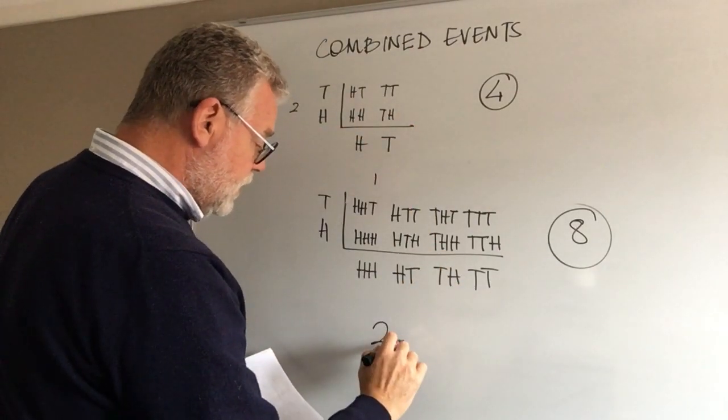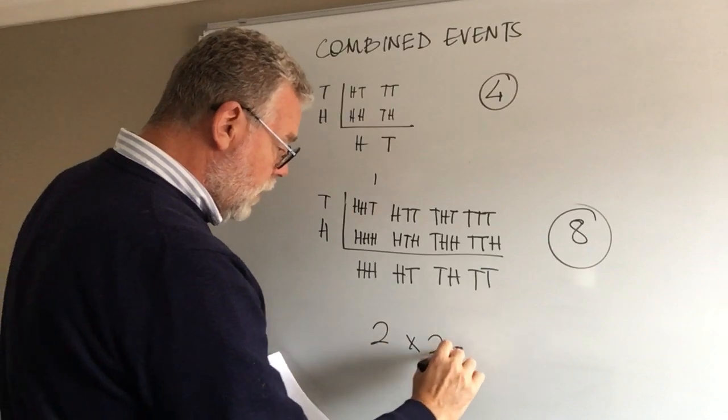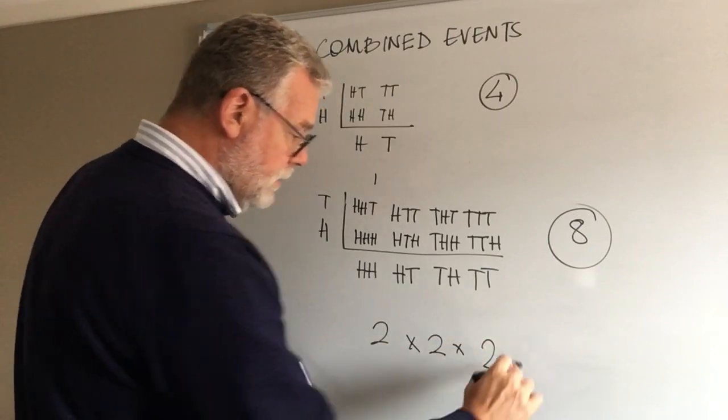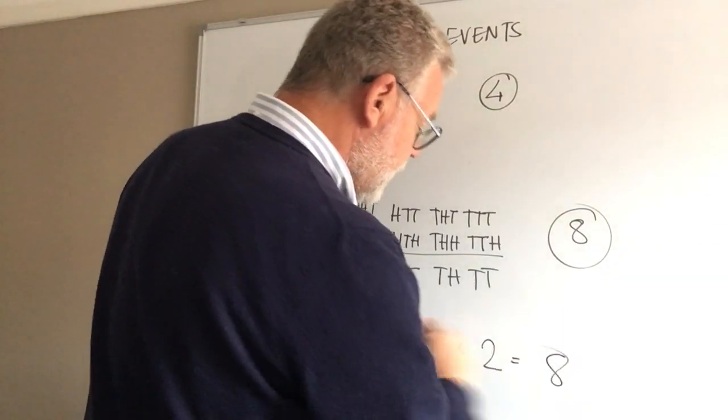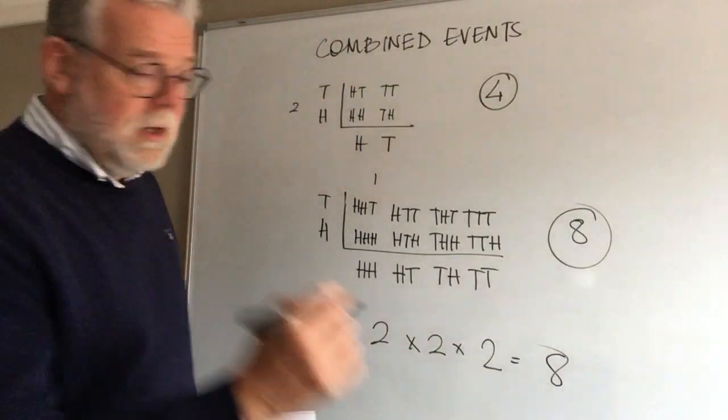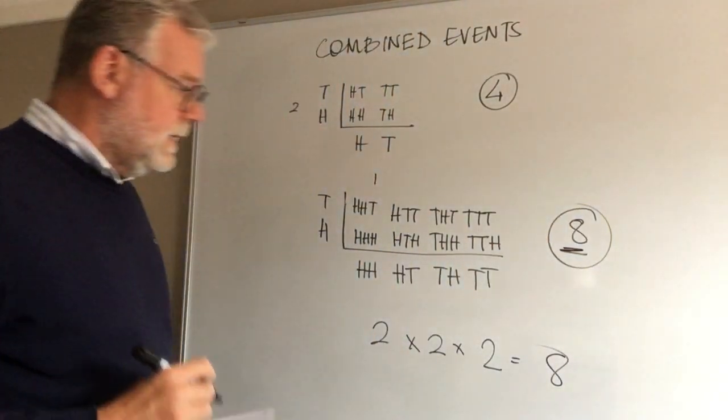Now that's interesting. Notice we had four there. We've got two options on coin one, two options on coin two, two options on coin three. Two times two is four, two times four is eight. So if we multiply them together, we always know what the probability is out of.